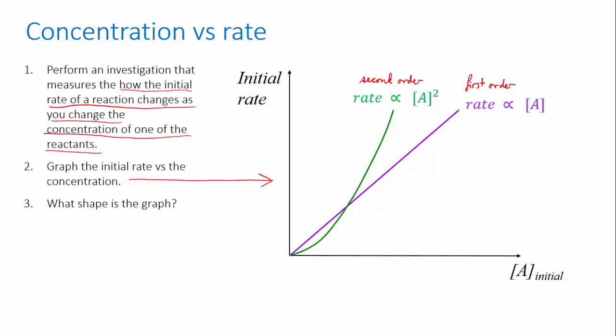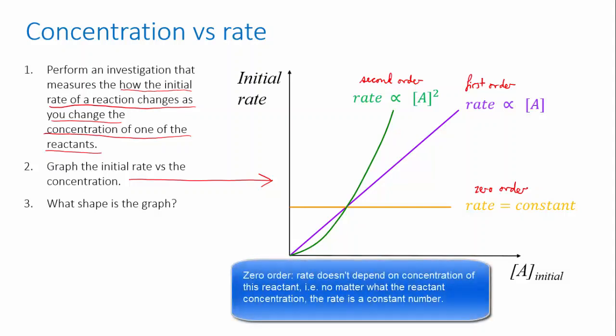Another possibility is that the rate doesn't depend on this reactant at all. No matter how you change the reactant's concentration, the rate doesn't change. This is called a zero or zeroth order dependence. Note that it doesn't mean that the reactant's not taking part in the reaction, just that the rate of the reaction is not dependent on the concentration of this reactant.